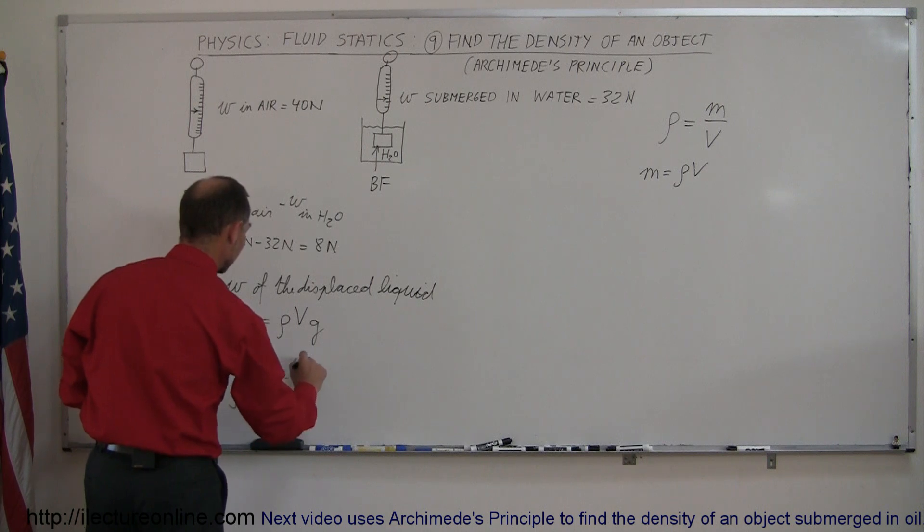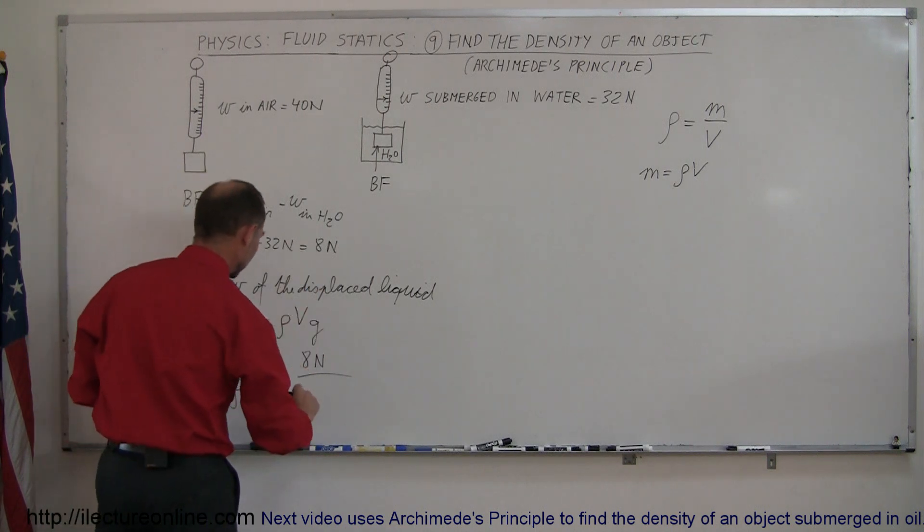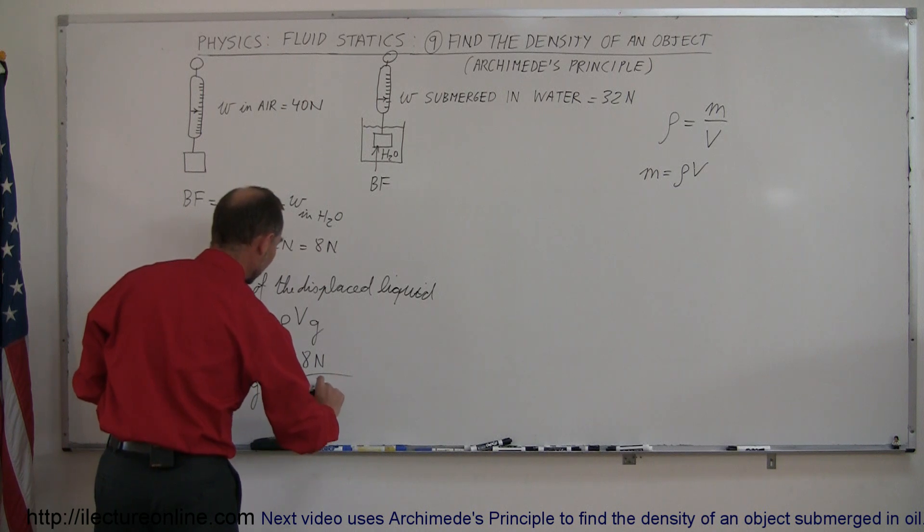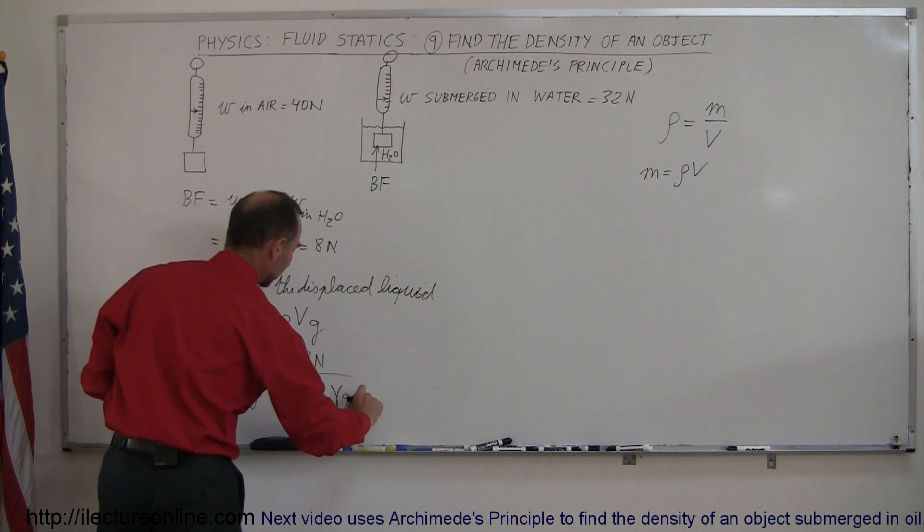Since we know the buoyancy force, which is 8 Newtons, and the density of the liquid, which is water, which is 1,000 kilograms per cubic meter, and then of course we know g, which is 9.8 meters per second squared, we can now calculate the volume of that object.